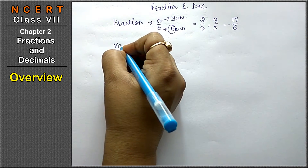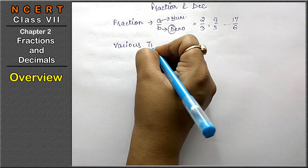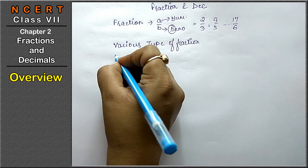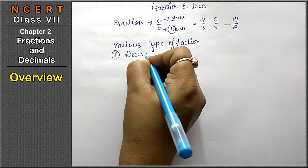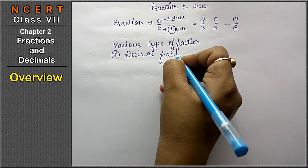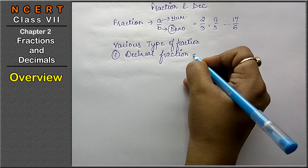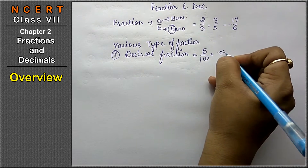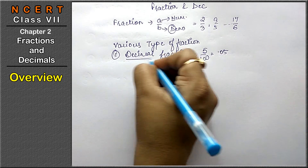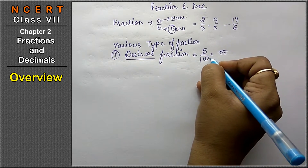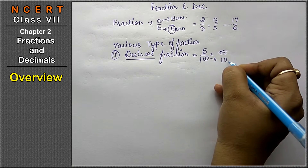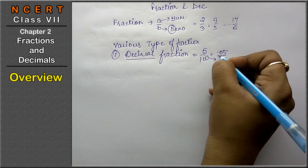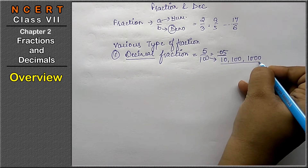There are various types of fractions. The first type is the decimal fraction. Decimal fractions are those which we can change into decimal form — like 5 upon 100 equals 0.05. These are fractions whose denominator is in the form of 10, 100, or 1000, and which can be changed into decimal form. That is called a decimal fraction.